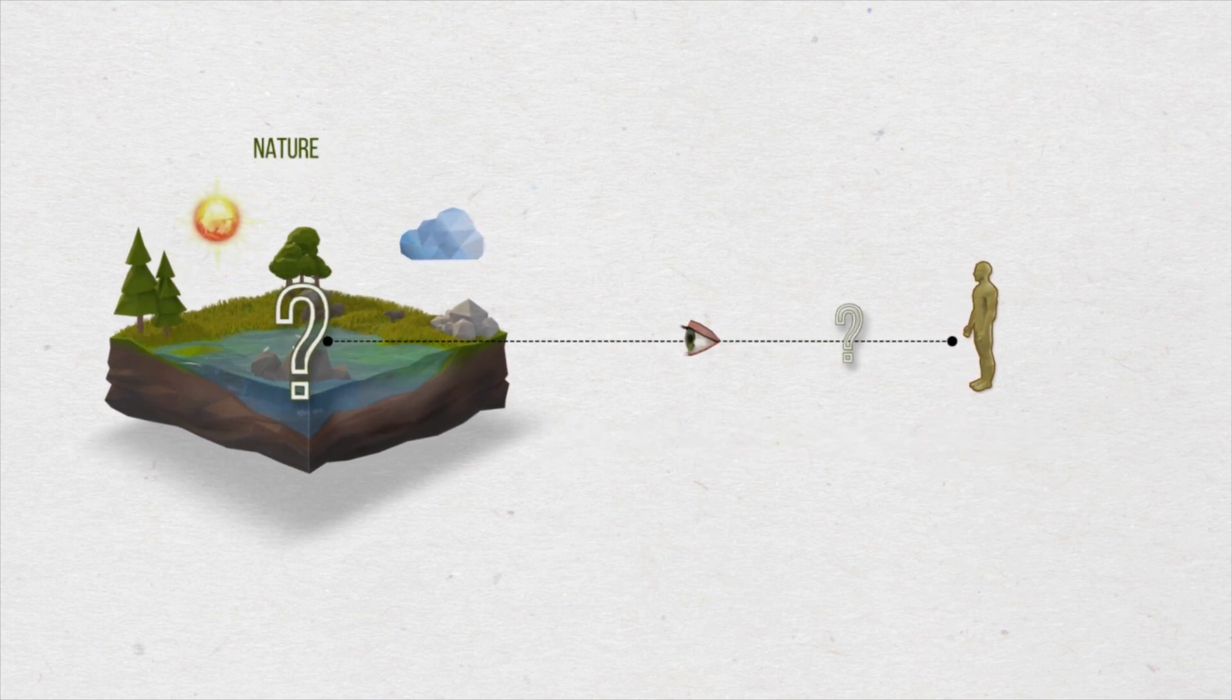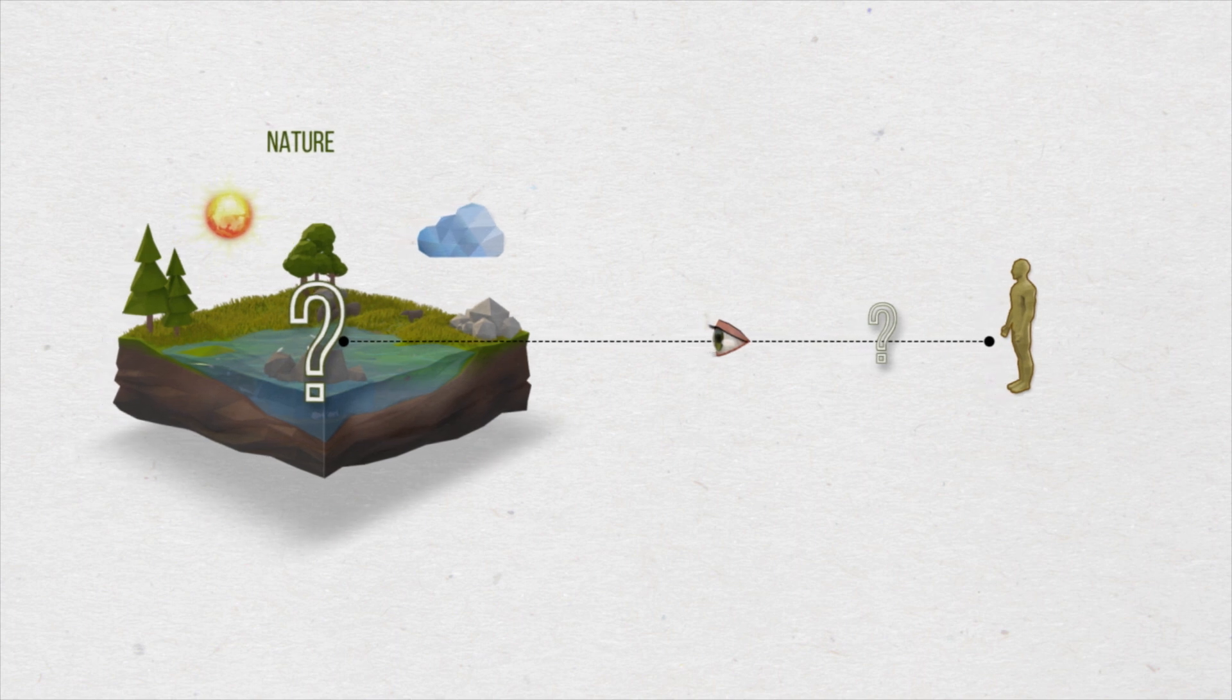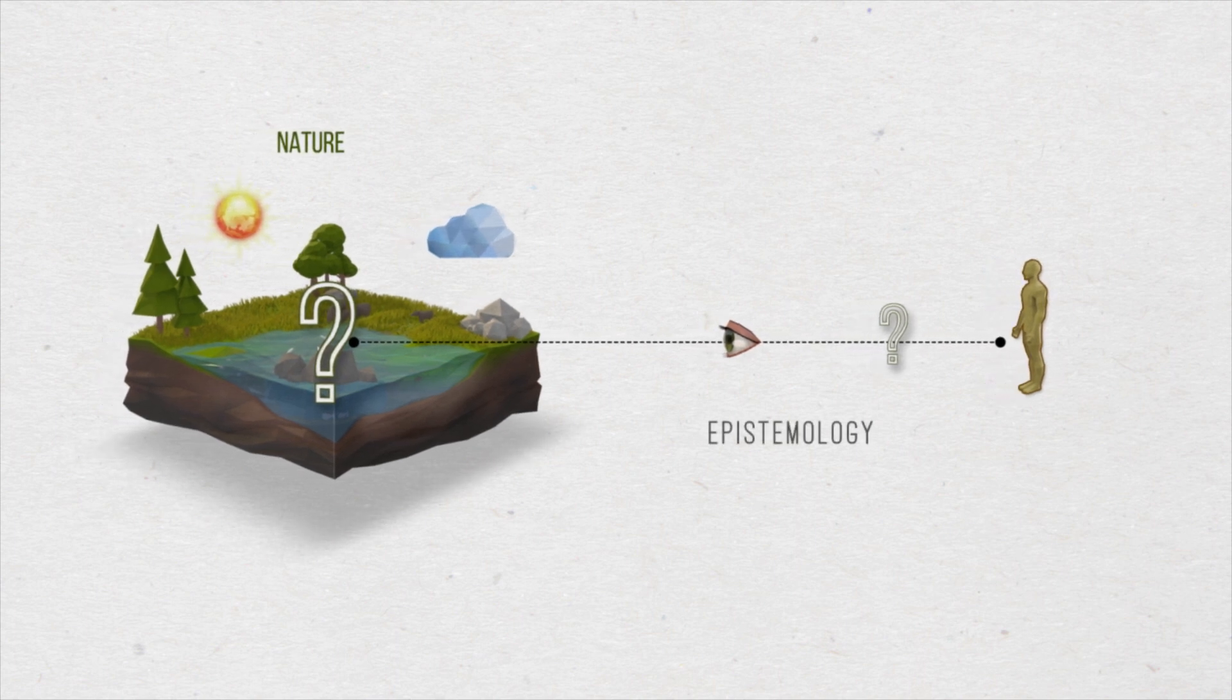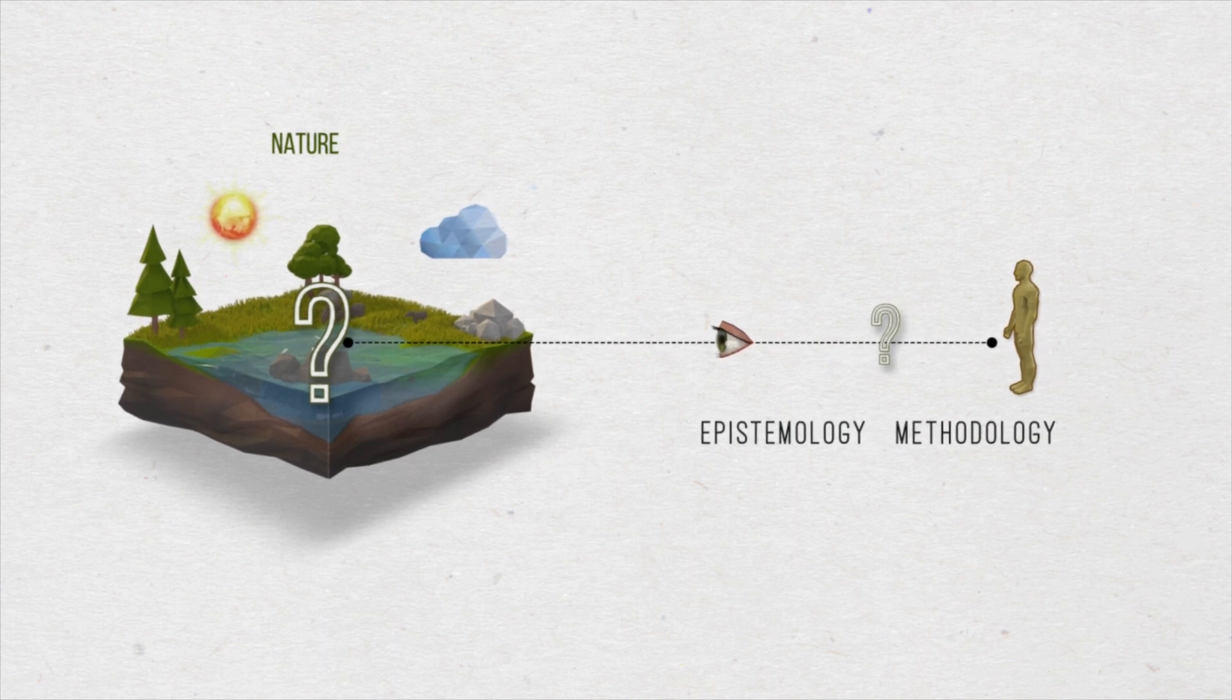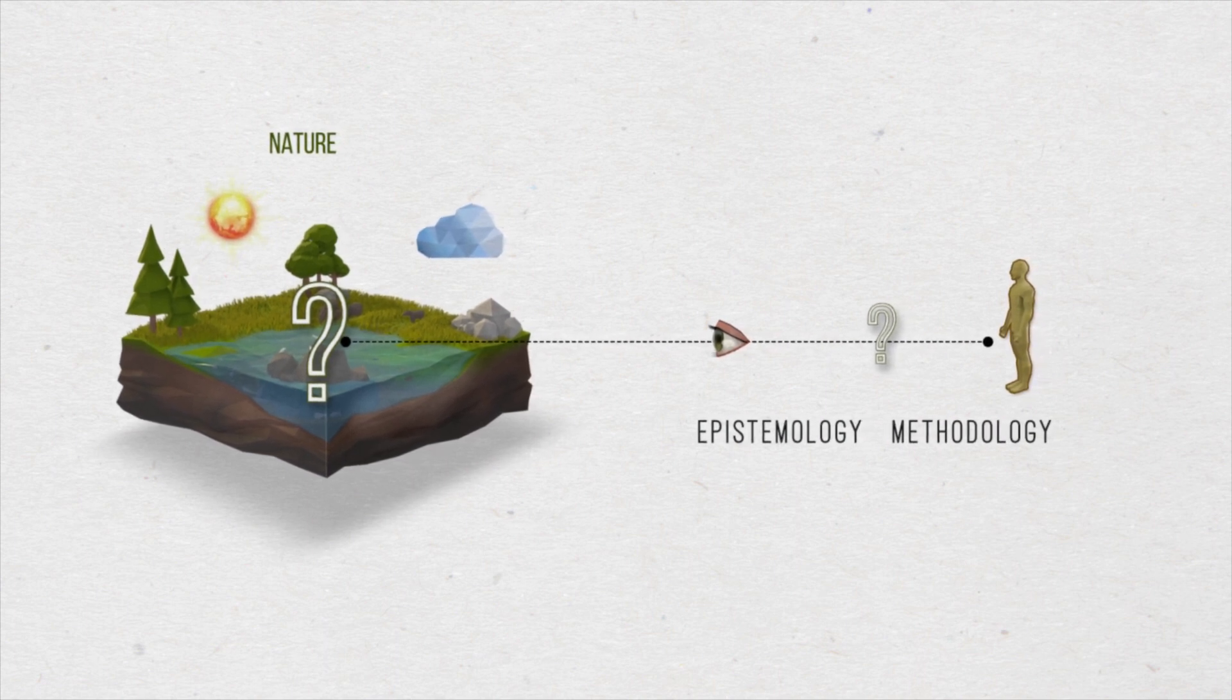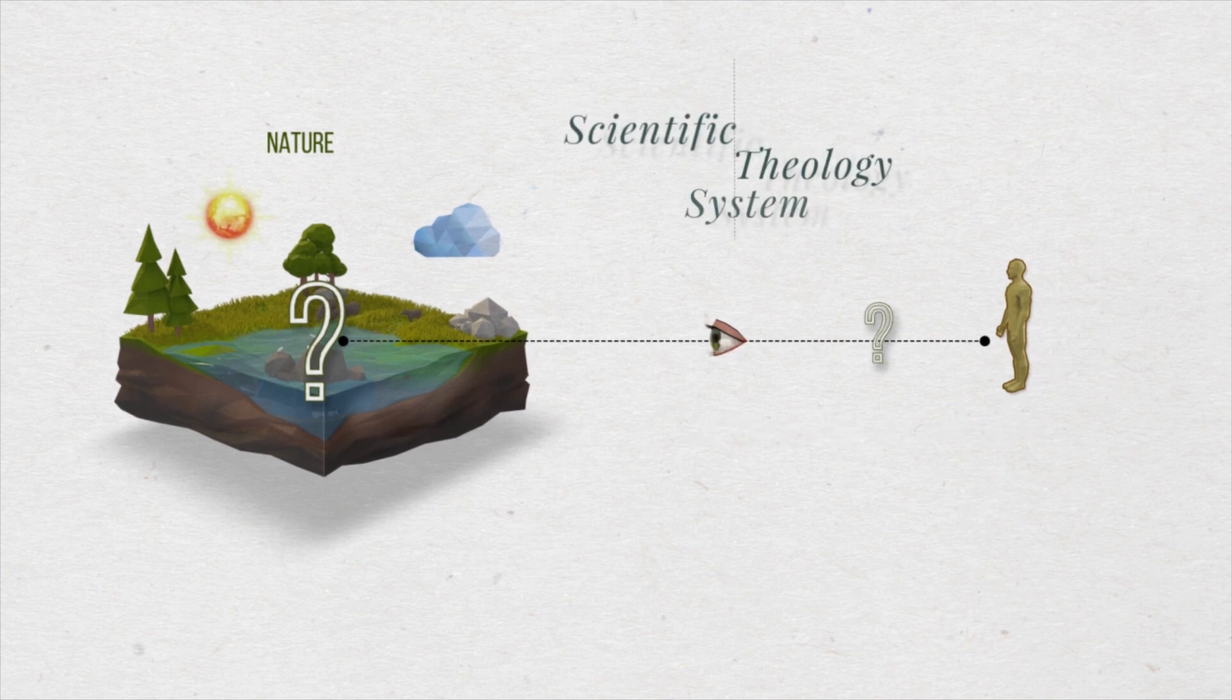Thus, not only an ontology of nature, but also an epistemology and a corresponding methodology of natural sciences are fundamental parts of the scientific theology system.